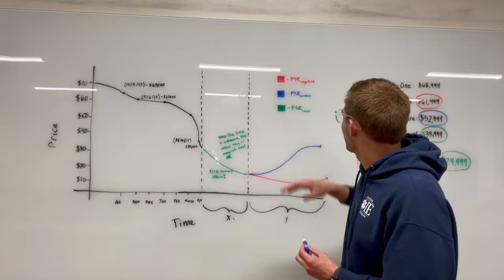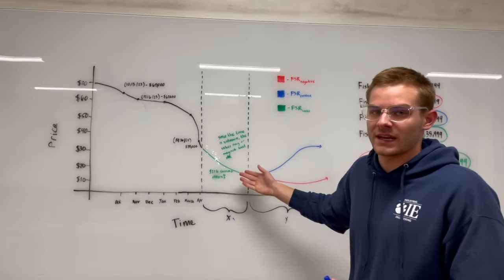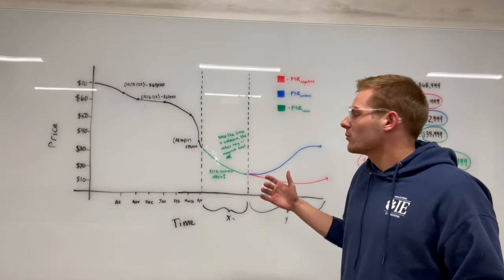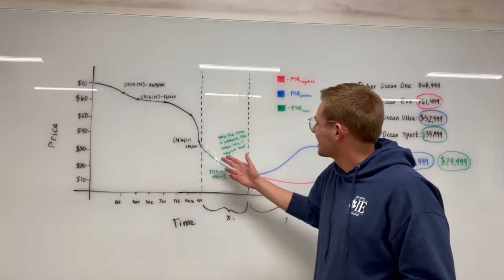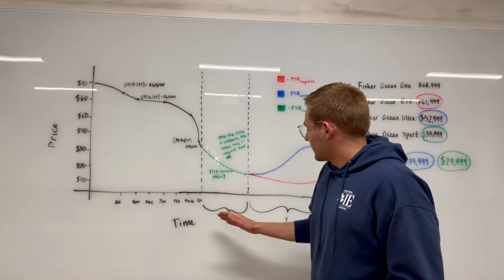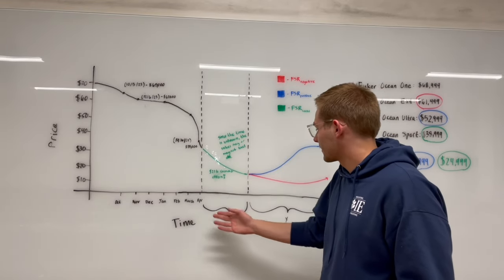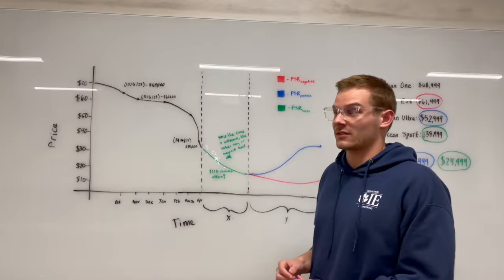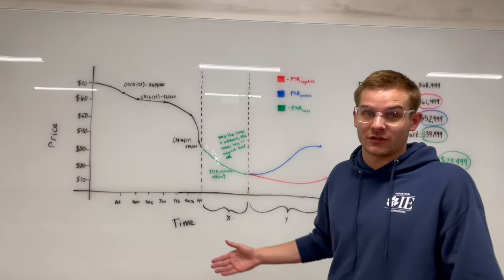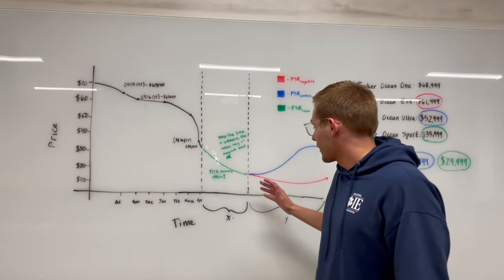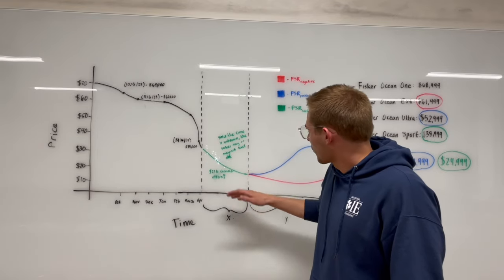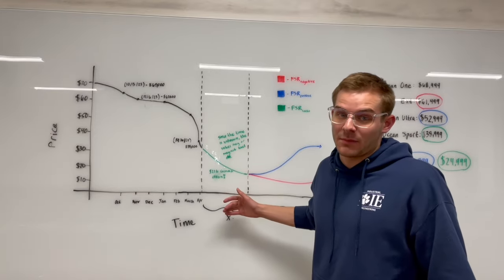Right here I put the 'Fisker limbo state' in green. This is what's happening now. We don't know the company's future, but we can reasonably deduce that prices will continue dropping at a steep rate because of the uncertainty. I denote this period by X - the time period that Fisker's in this limbo state. We don't know the value of X because we don't know how long this will last. I think a fair guess is that prices will continue to fall until something happens with the company.